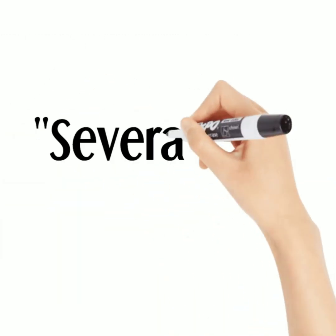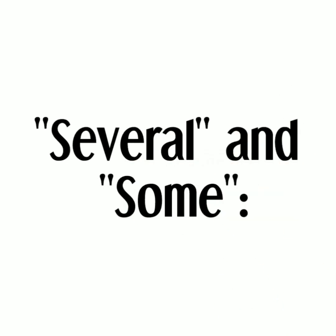Several and some. The quantitative adjectives 'several' and 'some' are used to describe an unspecified quantity of countable or uncountable nouns. 'Several' indicates more than a few but not a large number, while 'some' indicates an unspecified but positive quantity.